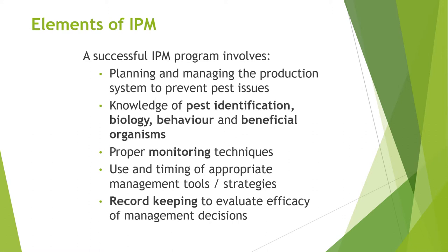The second step is a thorough knowledge of the pests, the beneficial organisms, and their biology and behavior. You need to be able to separate out the good guys you want in the orchard from the bad guys attacking your crop. You need to know their behavior and biology so you know when and how to look for them, and when they're at a key stage where controls will be most effective.